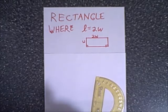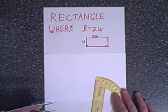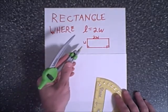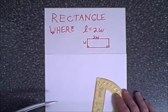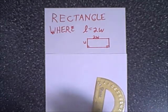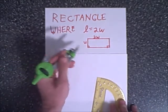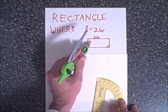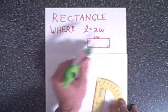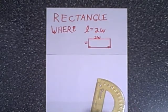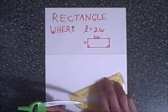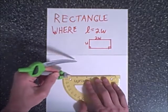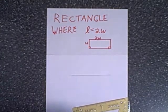The second figure we're going to construct is a rectangle, and I've added a twist: we're going to draw it such that the width is one half the length. A rectangle is simply a figure where all four angles are 90 degrees and opposite sides are congruent. So let's start by drawing what's going to be the bottom of the rectangle — a straight line segment.